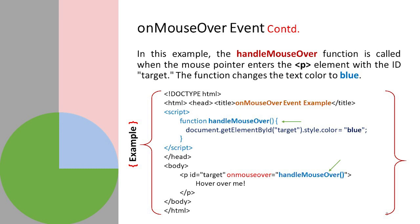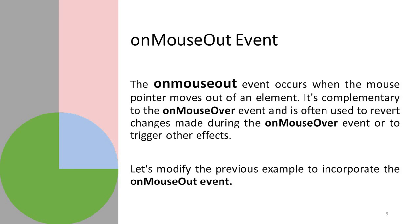In the method, 'document' refers to the white page or body tag. 'getElementById' is called with 'target' to select the paragraph. Then '.style.color' uses CSS to change the color property from black to blue. The next event is 'onmouseout,' which occurs when the mouse pointer moves out of an element — it is complementary to the mouseover event.